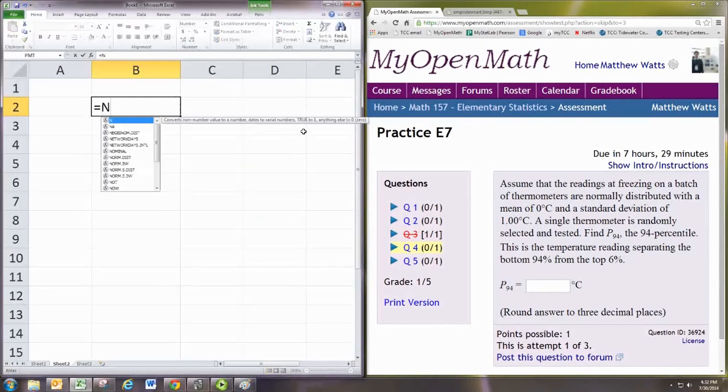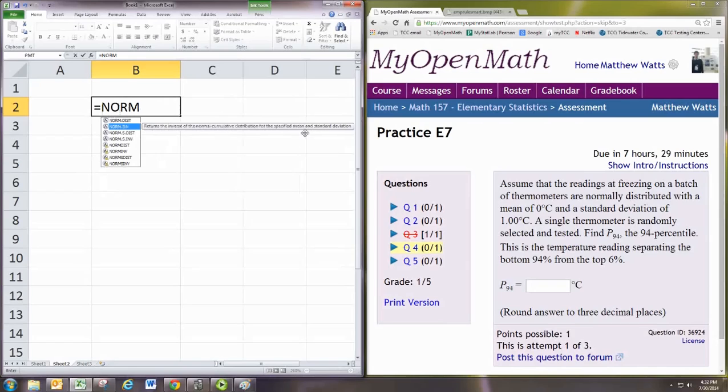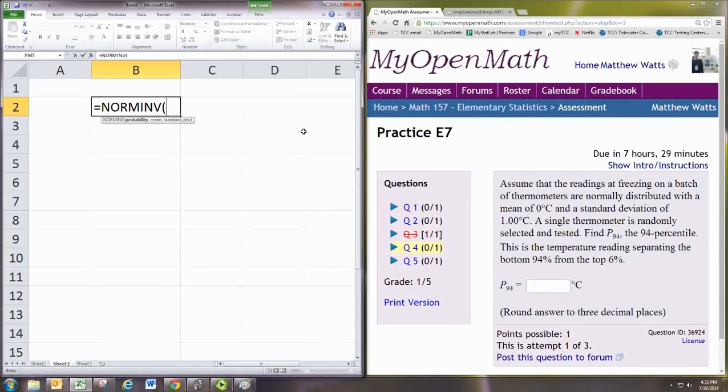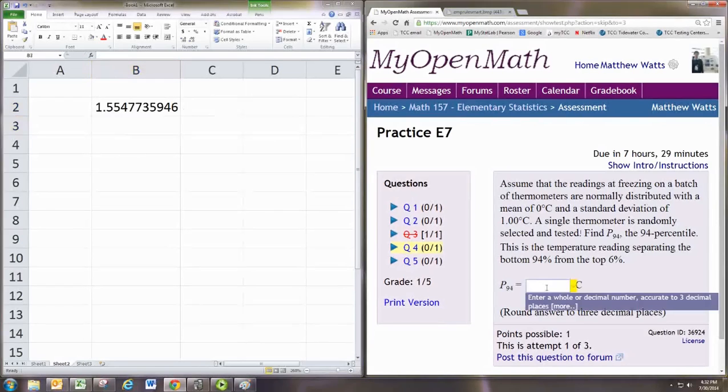On the spreadsheets, it's the norm inverse command. Tell it the probability or area to the left, which is 0.94. Tell it the mean, which is 0, and tell it the standard deviation, which is 1. And it will find the value for you. To 3 decimal places, it's 1.555.